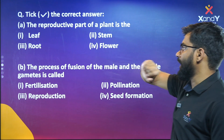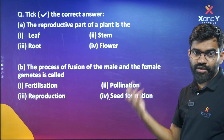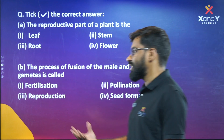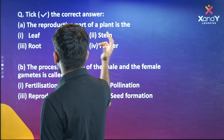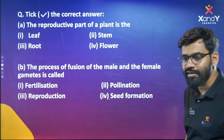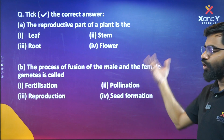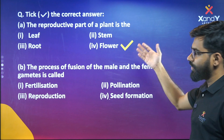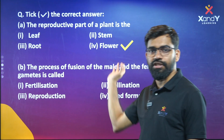Option A: The reproductive part of the plant is the — options are: the leaf, the stem, the flower, the root. The flower is the reproductive part. The leaf, stem, and root are the vegetative parts.